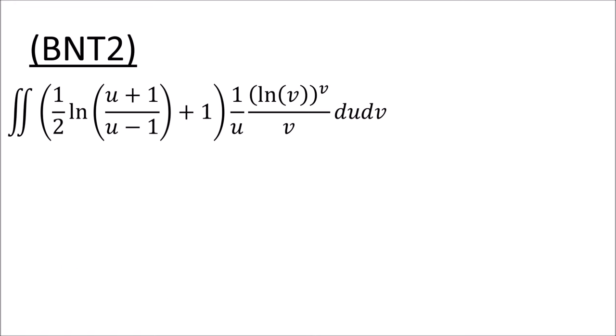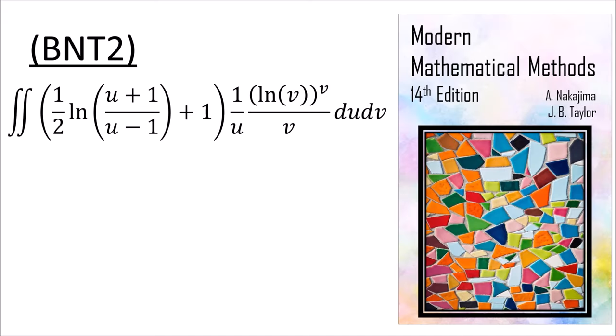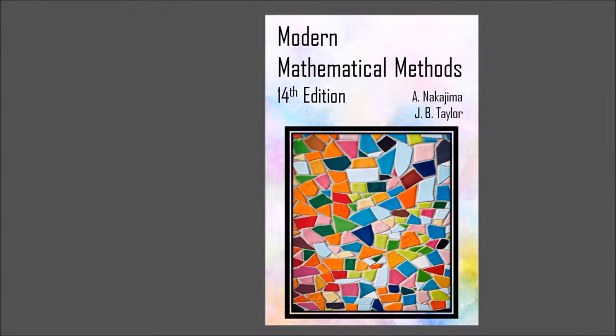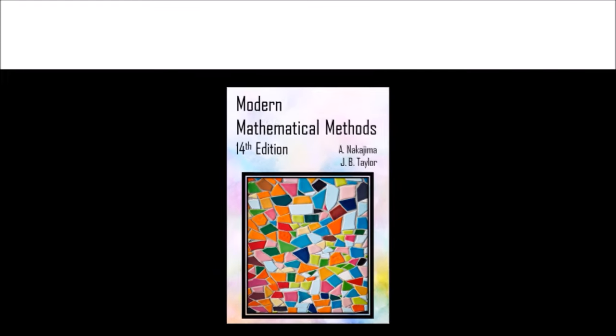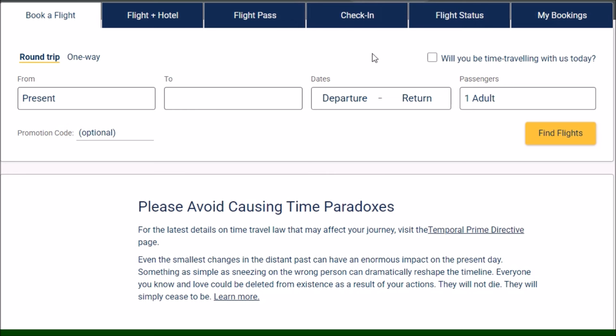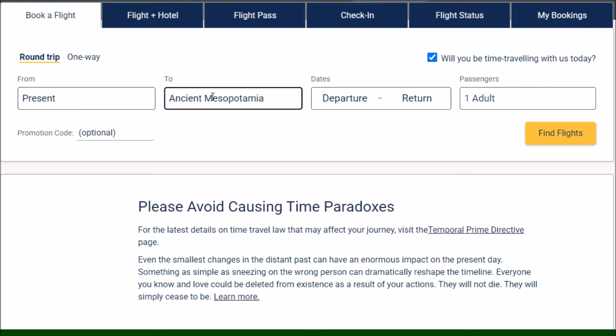Now there's some good news and some bad news. The good news is that there is a textbook that outlines how to solve integrals like this. But the bad news is that there's only one textbook in existence that has the solution. And that textbook can only be found in the catacombs beneath the ziggurat ruled by King Gildamesh. So I'm just going to go ahead and buy a plane ticket to ancient Mesopotamia real quick.